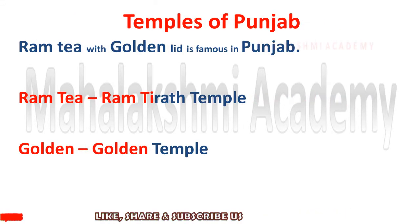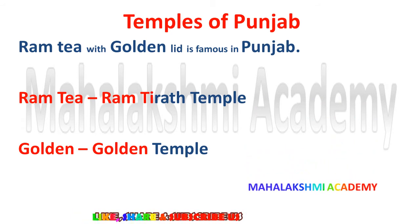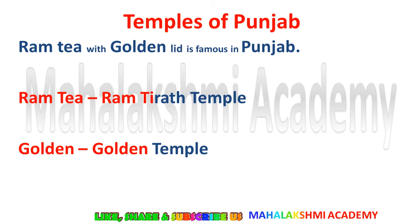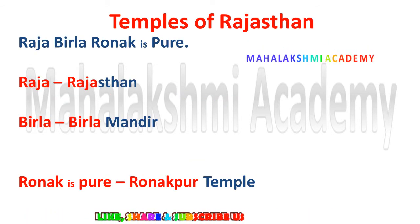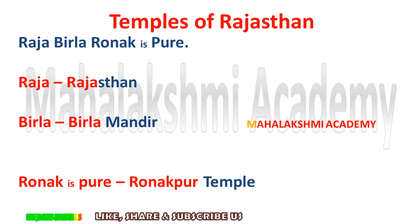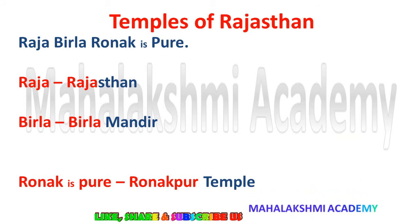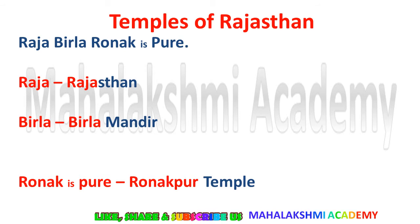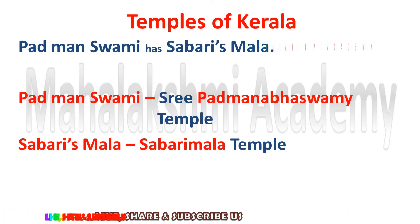Temples of Punjab — 'Ram tea with golden lid is famous in Punjab.' Ram tea is for Ramtirtha temple and golden is for Golden temple. These are the temples located in Punjab. Temples of Rajasthan — the trick is 'Raja Birla Ronak is pure.' Raja reminds you of Rajasthan. Birla is for Birla Mandir. Ronak is pure is for Ranakpur temple. So Birla Mandir and Ranakpur temple are in Rajasthan.